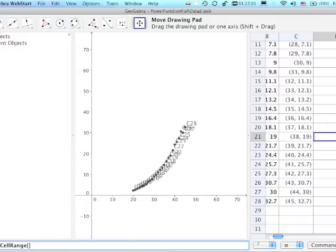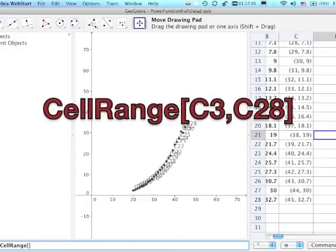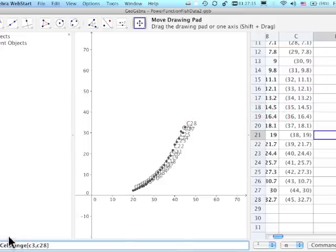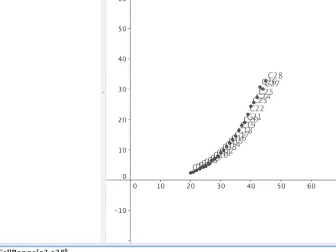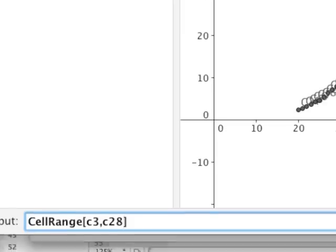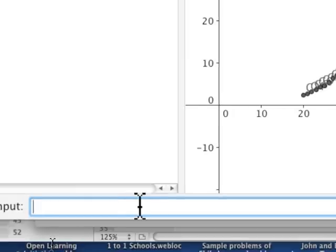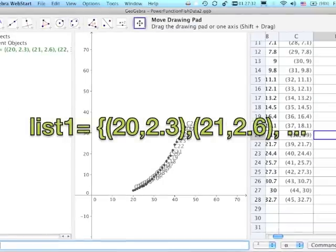My start cell was C3 for my points and my ending cell was C28. And so there's the input for this particular. And what that does is it creates this list of points up top.